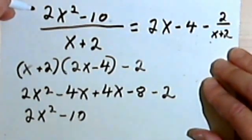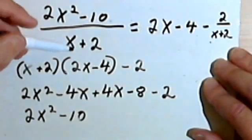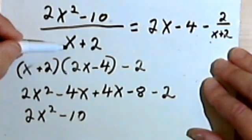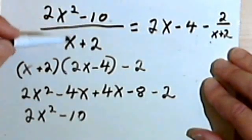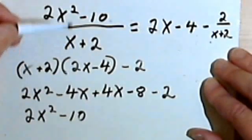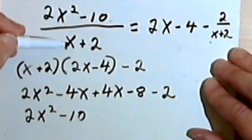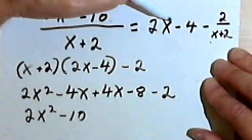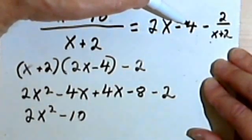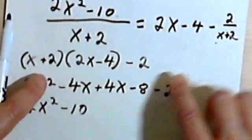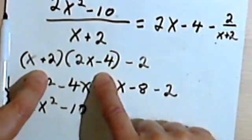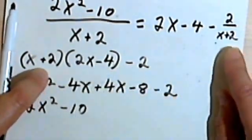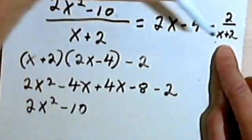So reviewing what we did to check, you take the denominator of your original fraction, or the divisor if you're thinking of this as a division problem, and you multiply that by the non-fraction part of your answer. So that's what we have here.